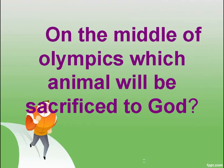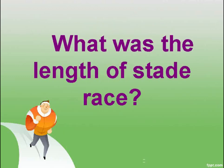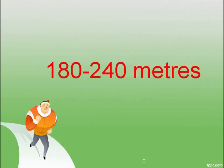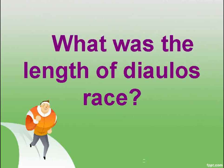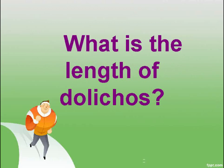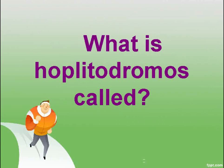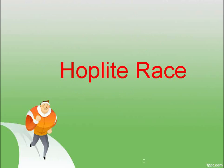On the middle day of the Olympics, which animals were sacrificed to the god? 100 oxen. What was the length of the Stade race? 180 to 240 meters. What was the length of the Diaulos race? 400 meters. What was the length of the Dolichos? 5 kilometers. What was the Hoplite race called? Hoplite race.